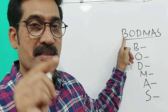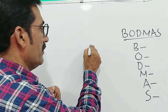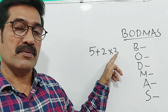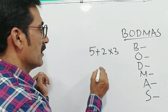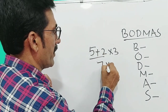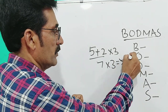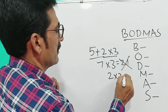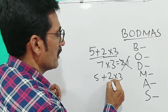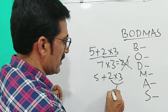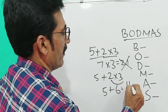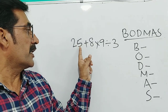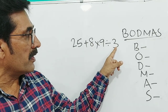Let us take an example: 5 plus 2 into 3. What's your answer? Do you think the answer is 5 plus 2 equals 7, then 7 into 3 equals 21? No, 21 is not the right answer. We must operate 2 into 3 first: that is 6, then 6 plus 5 is equal to 11. So 11 is the right answer.